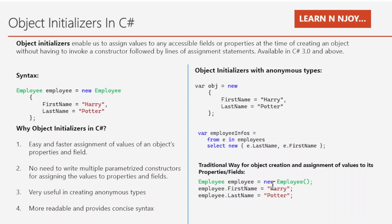Now let's look at the traditional way. Here, we call a constructor to create the imply instance and then assign values to its properties: imply e = new imply(); e.FirstName = "Harry"; e.LastName = "Potter". Please note that the object initializer syntax we write is eventually converted by the compiler into this traditional way. So both approaches produce the same result — object initializers just help us instantiate objects in an easier, faster, and more readable way, and they help a lot in LINQ queries.